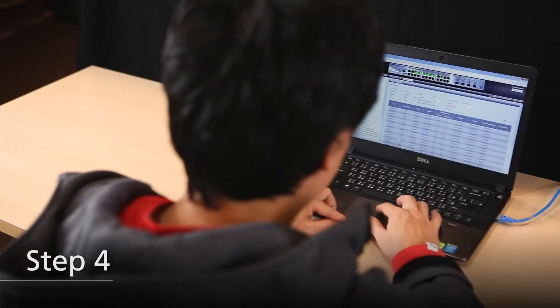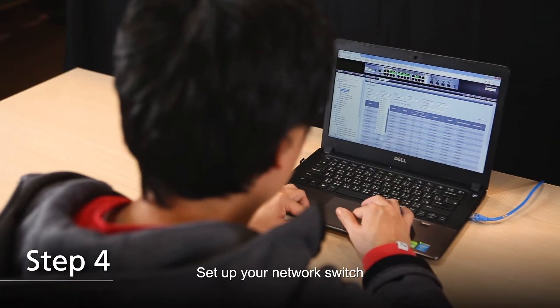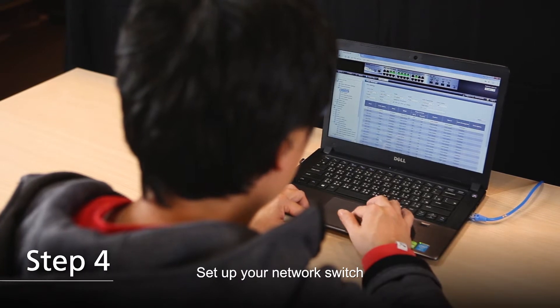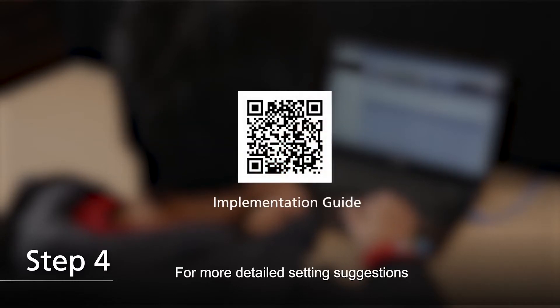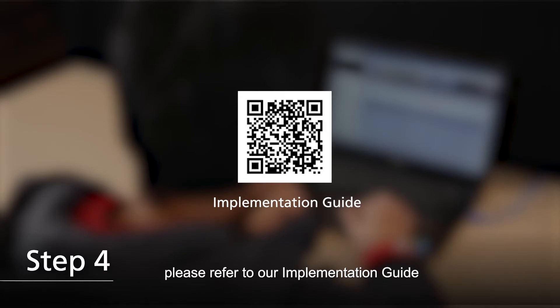Step 4: Set up your network switch. Enabling IGMP version 2 and jumbo frame is essential. For more detailed setting suggestions, please refer to our implementation guide.